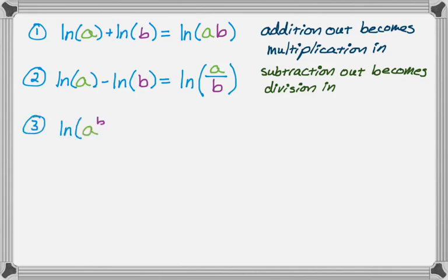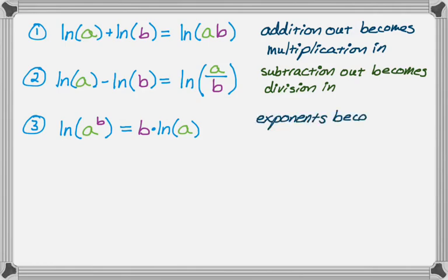A third property is that the natural log of A to the B — or just the log of A to the B — is equal to B times the log of A. So exponents become coefficients. And of course you can use these backwards: coefficients become exponents, division inside the log becomes subtraction outside, and multiplication inside the log becomes addition outside.